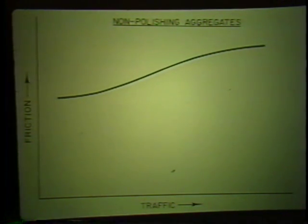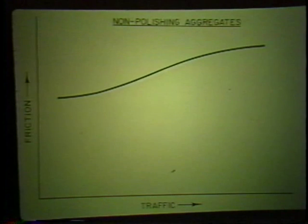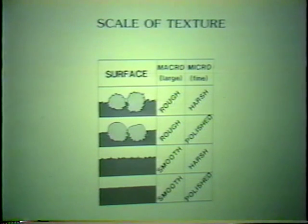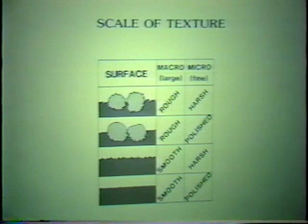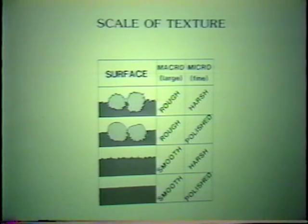As traffic moves over the surface, new rough surfaces are exposed and friction is increased. So you can see the use of a good wearing surface is essential to provide friction. The texture of the road surface also greatly affects skid resistance. Pavements should have two types of texture: macro-texture, the coarseness of the surface, and micro-texture, the fine grittiness that provides what we think of as friction.